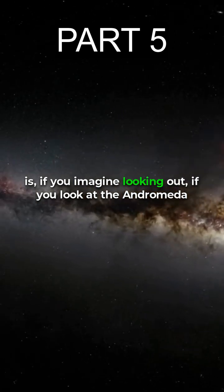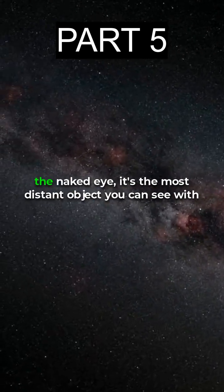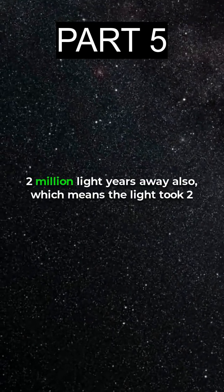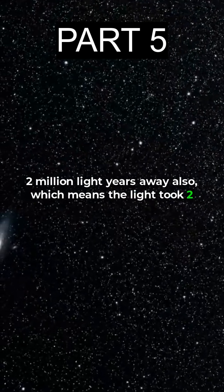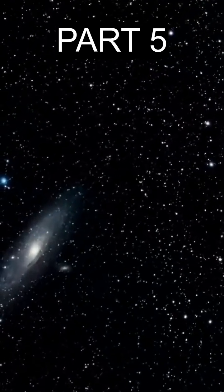If you imagine looking out, if you look at the Andromeda galaxy, which we can see with the naked eye, it's the most distant object you can see with the naked eye, and it's about two million light years away. Which means the light took two million years to get to us. So it's a long way away, but it's very big.